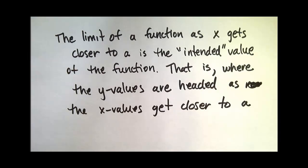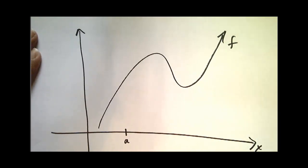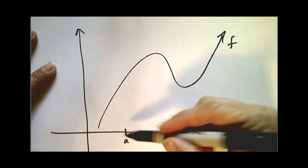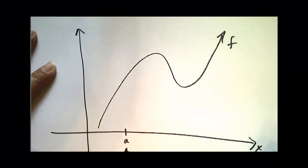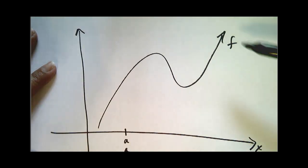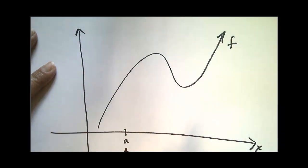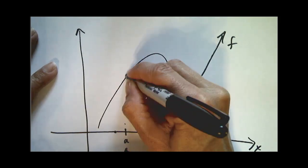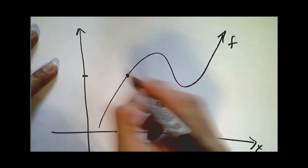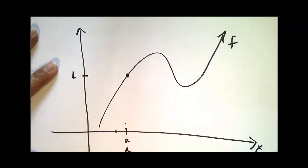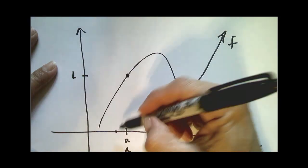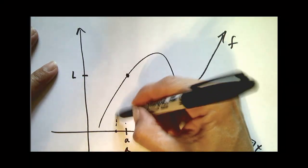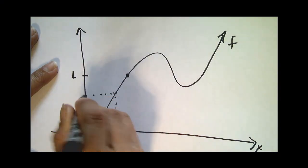A picture is often better explained than words. So let's look at this very simple graph of a function f on the xy plane. This is my x value of interest, a. What we are interested in is where my function is headed as my x values get closer to a. If I pick this x value right here, we'll say this y value is l.